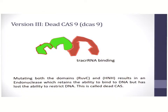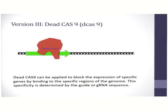The third version is dead Cas9, or dCas9. dCas9 has two domains which are inactivated, so this enzyme will not cleave DNA — it will only bind to DNA based on the crRNA region. dCas9 is generally used in promoter studies where it can be bound to the promoter binding site and inactivate specific genes. It's a useful tool in functional genomics.